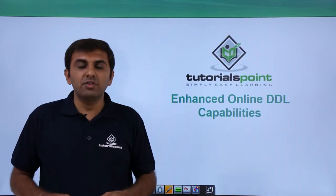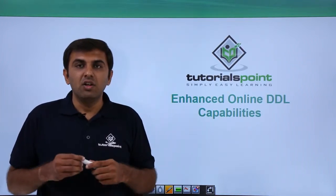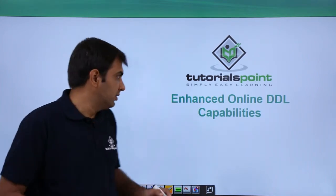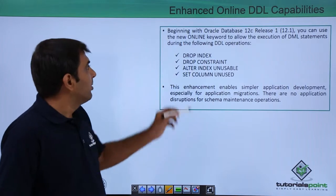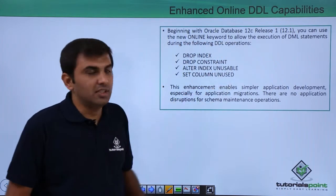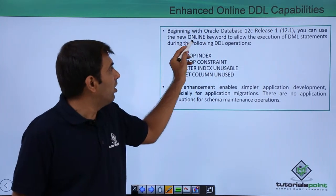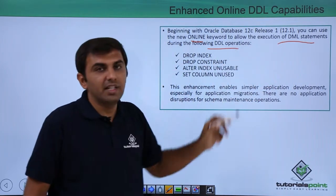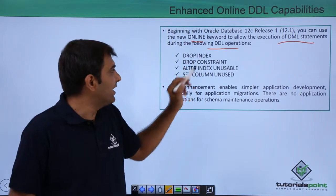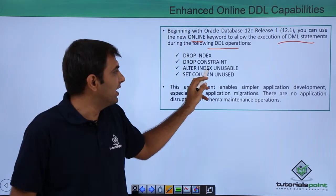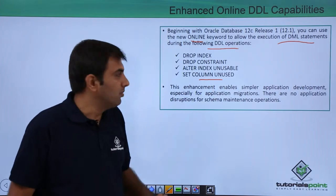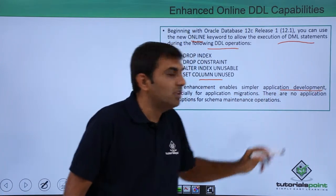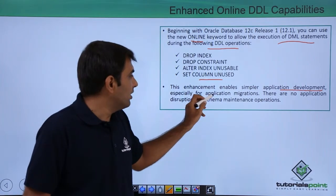Hello friends. In this session we are going to discuss Enhanced Online DDL Capabilities in Oracle Database 12c. Beginning with Oracle Database 12c, you can use the online keyword to allow execution of DML statements during the following DDL operations: drop index, drop constraints, alter index unusable, and set unused column. This enables simpler application development and application migration.